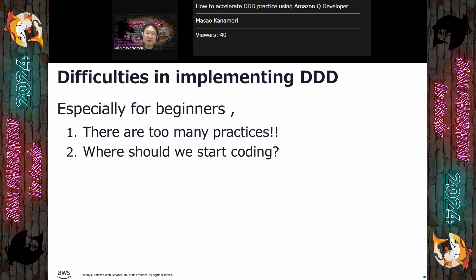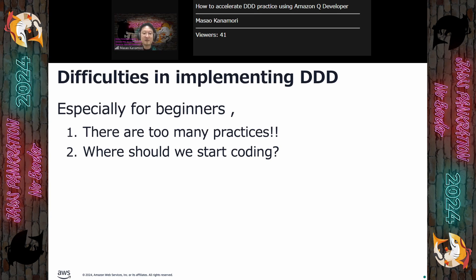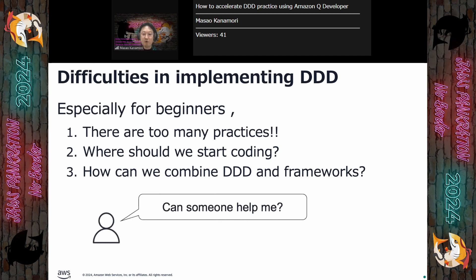Secondly, where should we start coding? Of course, if your company has some coding guidelines or standards, or if you have access to experienced senior members, they will be able to provide guidance. But reality rarely works out that way — usually we don't have those ideal guidances. Third, you will typically use a web application framework to develop your system, and each web application framework has its own structure. Do you know how we can combine DDD practices with that framework? So, if you are a beginner of DDD and there is no one who can help you, how can you start?